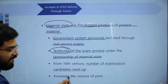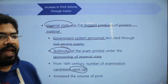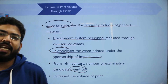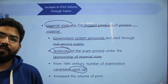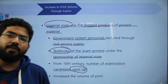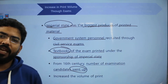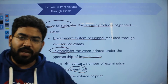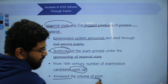From the 16th century onwards, the number of examinations increased along with the number of candidates, and hence printed material started increasing significantly. Due to the government's involvement in the expansion of printed material, the volume of print actually increased quite significantly in China.